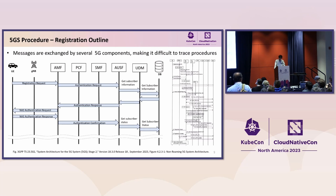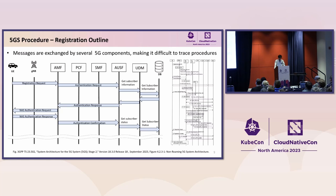In 5G, each control plane process is defined as a procedure — such as registration, session establishment, handover, and so on. However, it is difficult to track the processing of a procedure because it is performed by multiple components. For example, these figures show part of the registration procedure: services are provided by the coordination of each network function. In addition, there is no mechanism yet to monitor a series of procedures end-to-end in real-time, making it difficult to discover where a problem occurred.